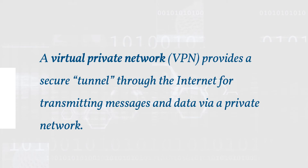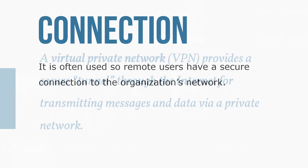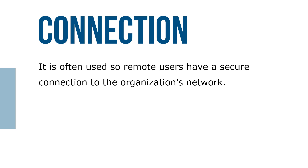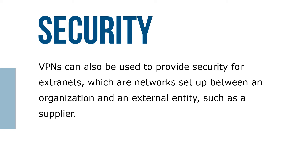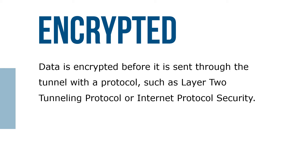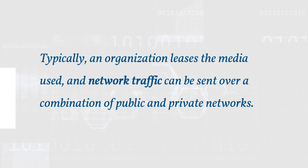A virtual private network, or VPN, provides a secure tunnel through the internet for transmitting messages and data via a private network. It is often used so that remote users have a secure connection to an organization's network. VPNs can also be used to provide security for extranets, which are networks set up between an organization and an external entity such as a supplier. Data is encrypted before it's sent through the tunnel with a protocol such as Layer 2 Tunneling Protocol (L2TP) or Internet Protocol Security (IPSec). The cost of setting up a VPN is usually low, but transmission speeds can be slow and a lack of standardization can also be a problem.